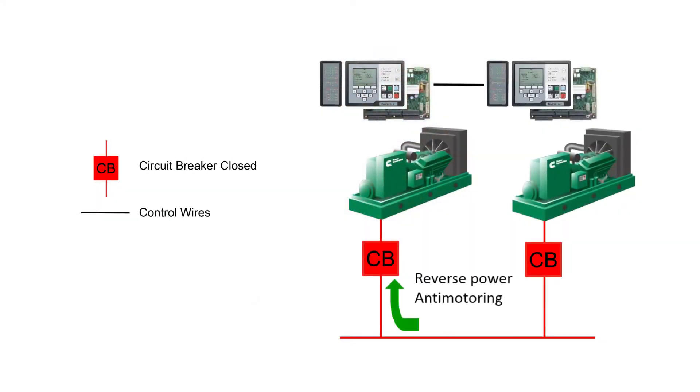In this video we will focus on generator set protection and Amp Sentry. Local codes and standards stipulate that generator sets must be protected from the effects of short circuit and overload conditions. There are two very important protection elements in parallel generator sets: reverse power or anti-motoring, and under excitation or loss of field.